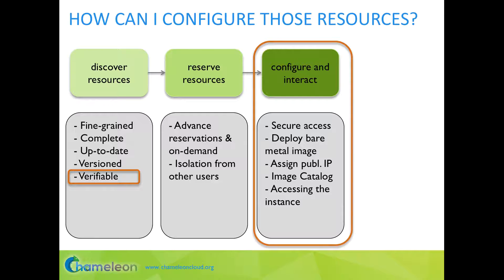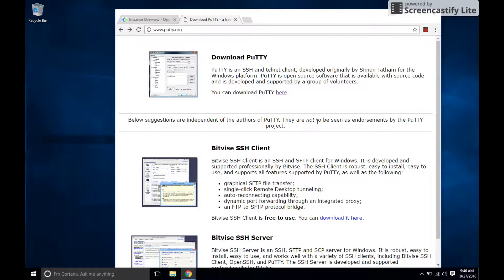You have obtained a lease — a temporary ownership of some Chameleon resources. To access it securely, the most common way is to use a public-private key pair and connect via SSH. To set up a key pair in Windows, you will need a free SSH client called PuTTY, available at putty.org. You will need to download two programs: PuTTY, an SSH client for logging into your instance, and PuTTYGen, a program that generates public-private key pairs for SSH. Before running PuTTYGen, you may need to temporarily disable Windows SmartScreen via the Control Panel under System and Security.